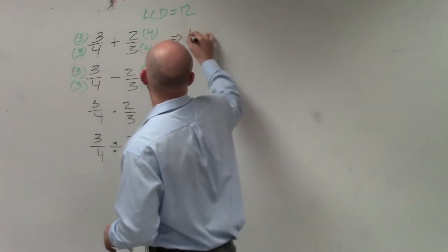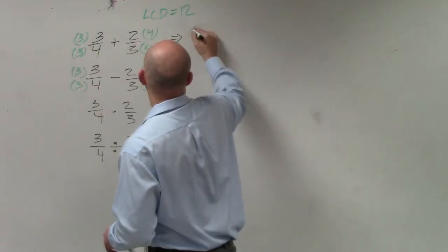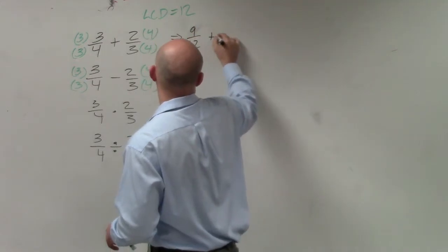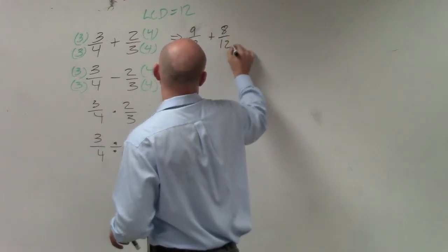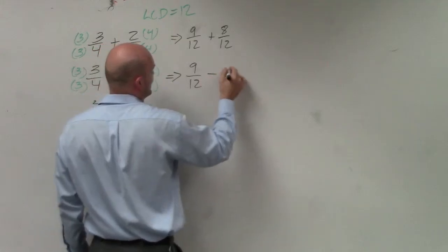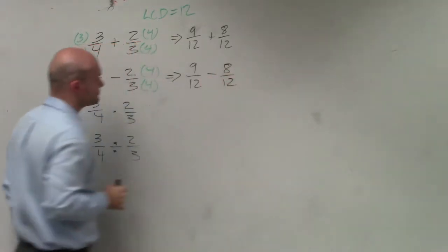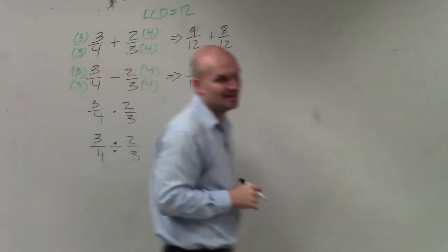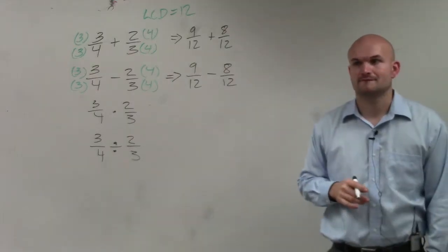By doing that, I now obtain 9 over 12 plus 8 over 12, and 9 over 12 minus 8 over 12. Does everybody see how I got those values?